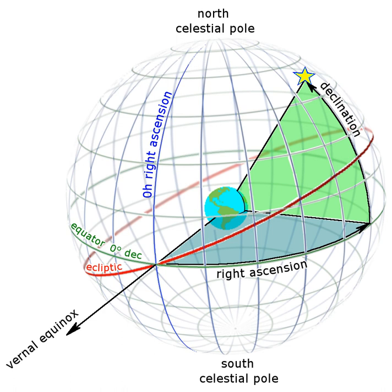In astronomy, declination is one of the two angles that locate a point on the celestial sphere in the equatorial coordinate system, the other being hour angle.